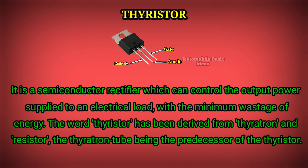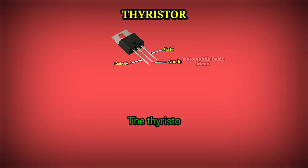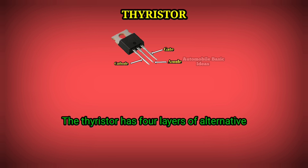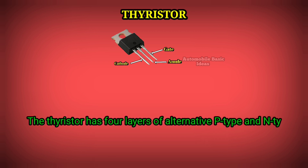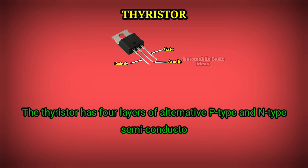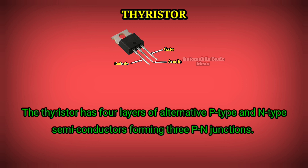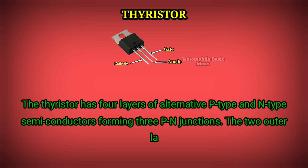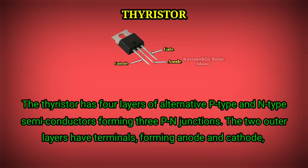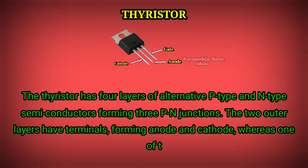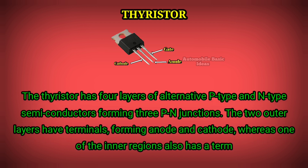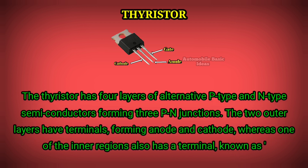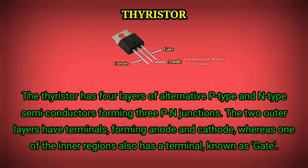The thyristor has four layers of alternative p-type and n-type semiconductors forming three p-n junctions. The two outer layers have terminals forming the anode and cathode, whereas one of the inner regions also has a terminal known as the gate.